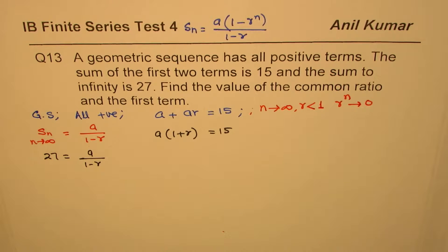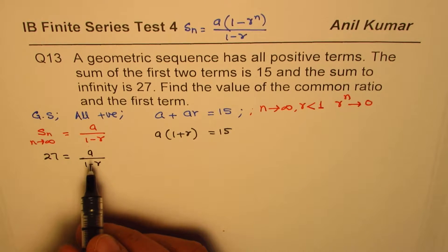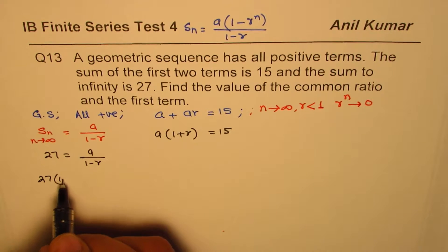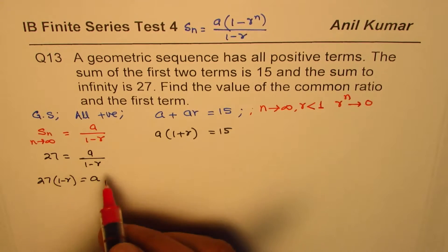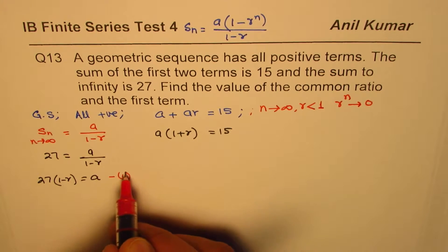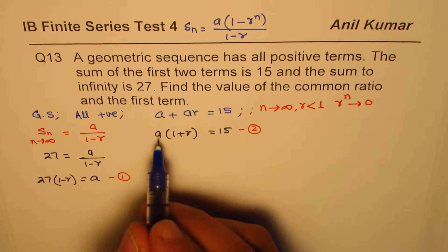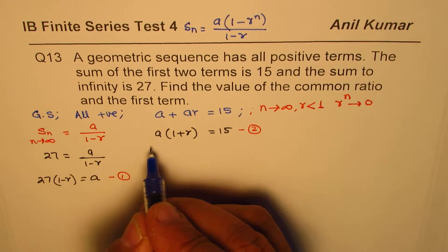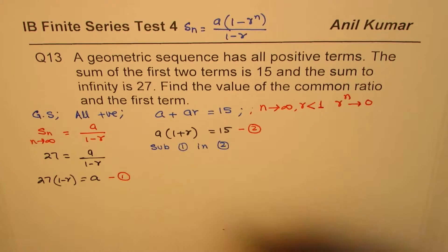Using these two equations we can solve. To avoid fractions, from equation one we write a = 27 times (1 minus r). Now I will substitute this value of a into equation two.